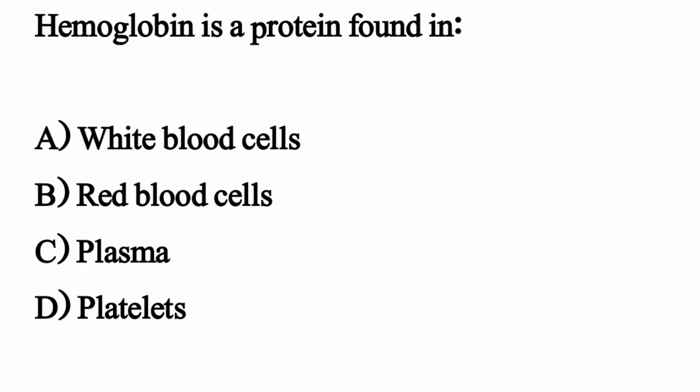Hemoglobin is a protein found in — the correct option is Option B: Red blood cells.